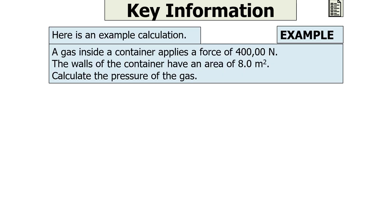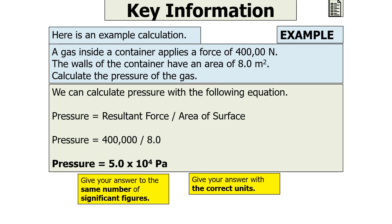Here's an example calculation. A gas inside a container applies a force of 400,000 newtons. The walls of the container have an area of 8 metres squared. Calculate the pressure of the gas. Using pressure equals force divided by area: 400,000 divided by 8 gives a pressure of 5 × 10⁴ pascals, because the force is in newtons and the area is in metres squared.